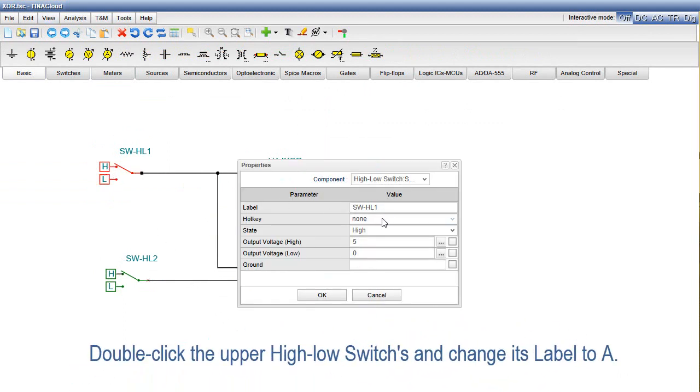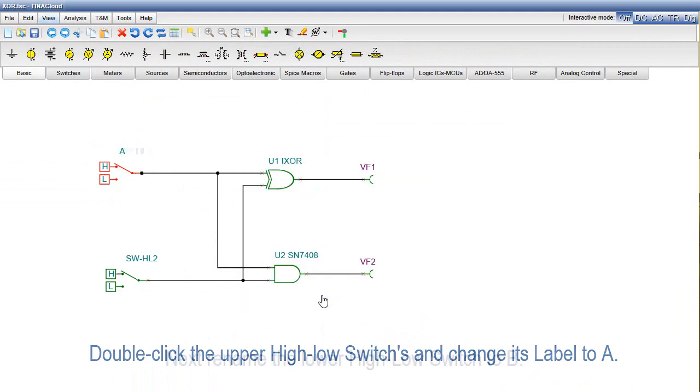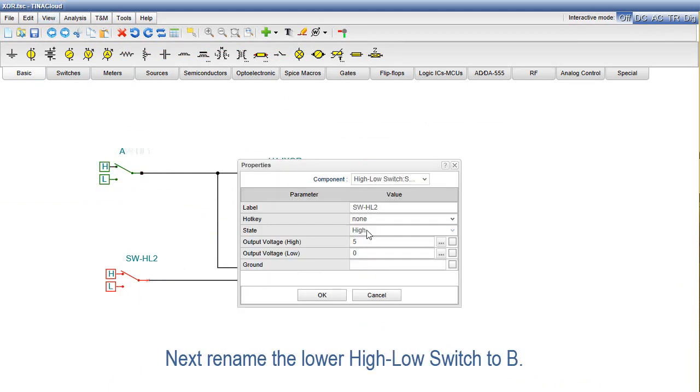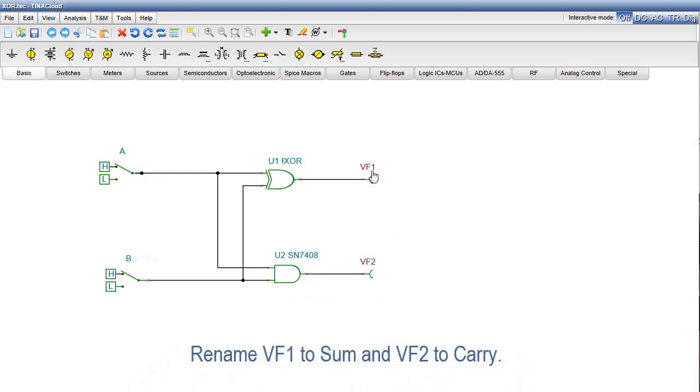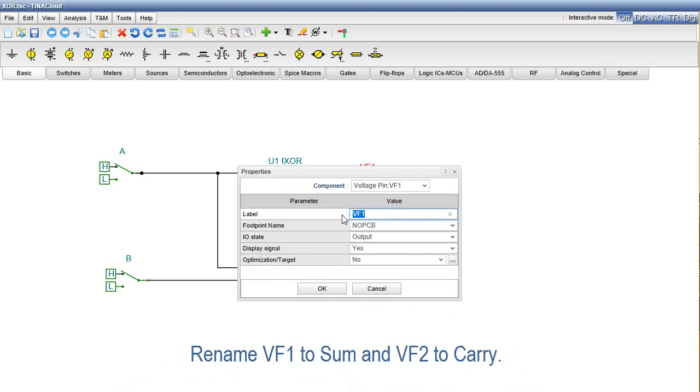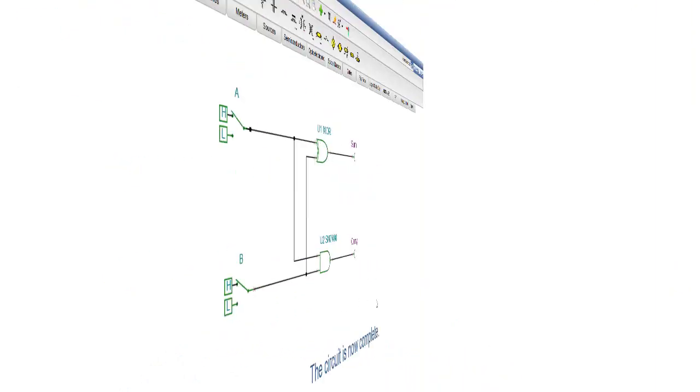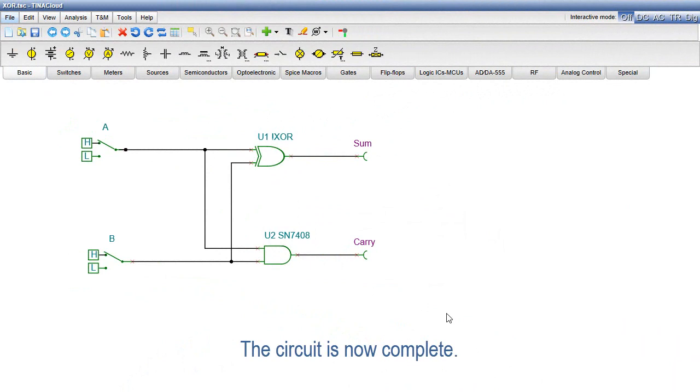Double-click the upper high-low switches and change its label to A. Next, rename the lower high-low switch to B. Rename VF1 to SUM and VF2 to CARRY. And the circuit is now complete.